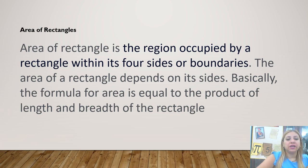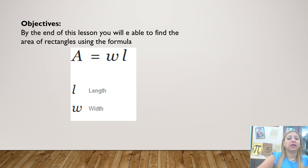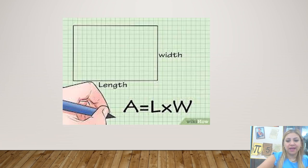We will learn about area of a rectangle. The area of a rectangle is the region occupied by a rectangle within its four sides or boundaries. The area of a rectangle depends on its sides — basically, the formula for area is equal to the product of length and width. By the end of this lesson, you will be able to find the area of a rectangle using the formula A equals W times L, where L represents length and W stands for width. As you see in this example, this is the length (the long side) and this is the width (the shorter side). If you multiply them, you will find the area, which is the space inside the shape.